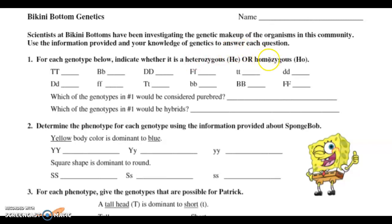Homozygous — homo means the same. So homozygous means the zygote has the same alleles. It's going to have either two dominant alleles — big letter, big letter — or two recessive alleles — little letter, little letter. So heterozygous would be big letter, little letter. Homozygous dominant would be big letter, big letter. Homozygous recessive would be little letter, little letter.